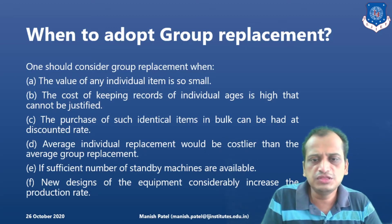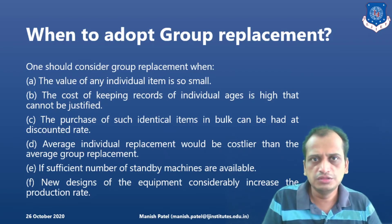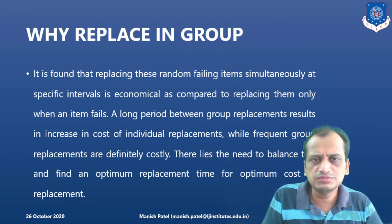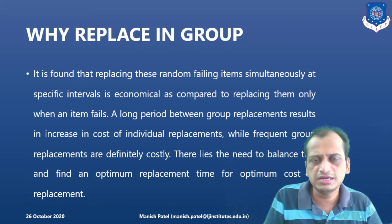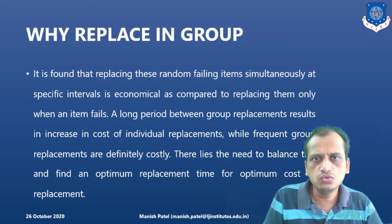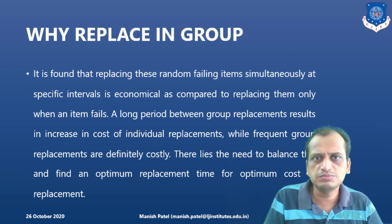The new designs of equipment considerably increase with the production rate. As production rate increases, new designs of these products — for example light bulbs — emerge, and you will see completely new designs nowadays. When these items are failing randomly, it is economic to replace them in a group after a certain point of time. It sometimes becomes very expensive to replace them individually as and when they fail, so it is more economical to replace them in a group after some period of time. Companies compare both options to find out which policy is beneficial — individual replacement policy or group replacement policy.